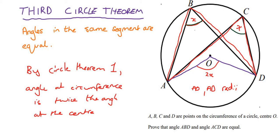So I hope this makes sense. We're basically using the fact that circle theorem one tells us that the angle on the circumference is half that of the angle at the center. And because we've got two angles on the circumference, they're both half the angle at the center, and so they're both equal.